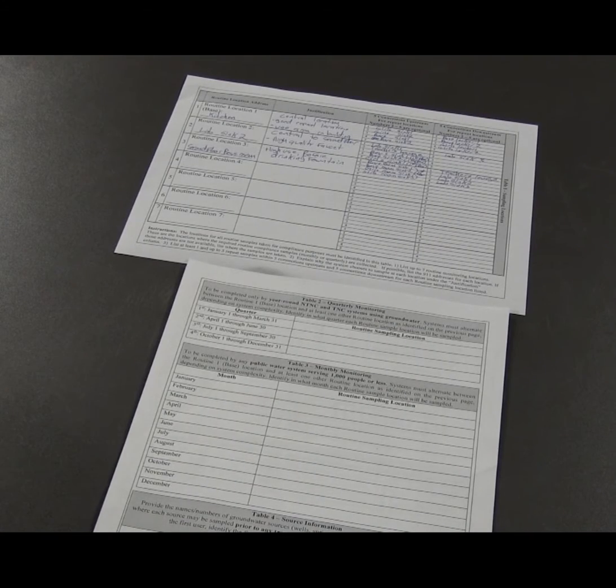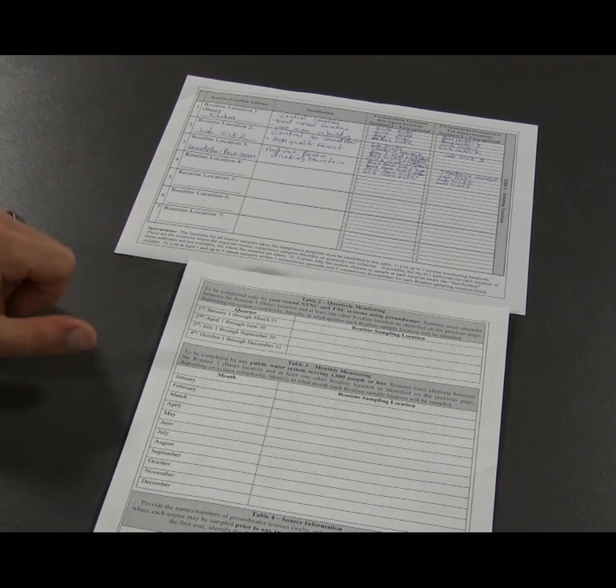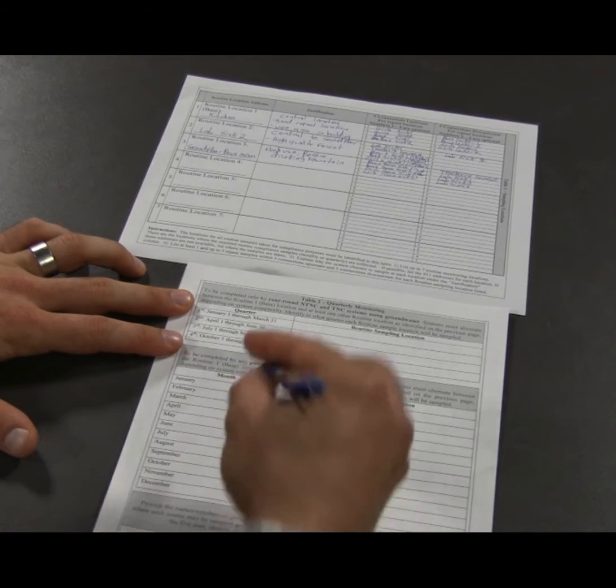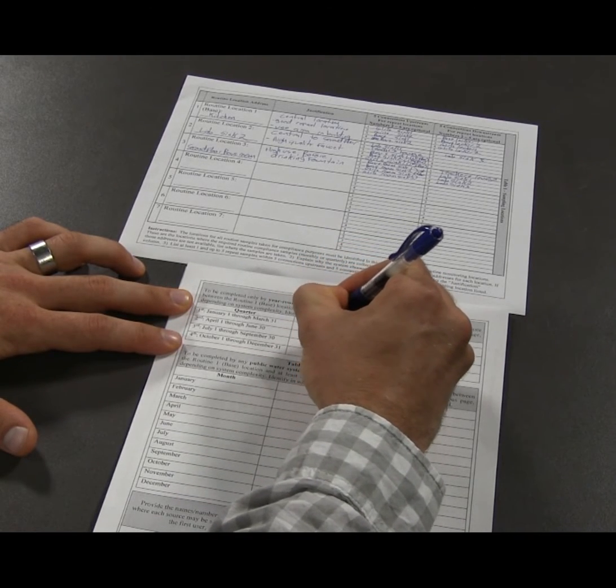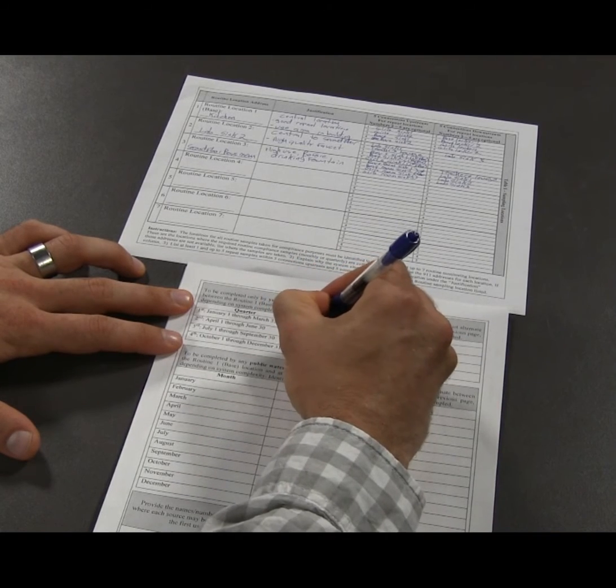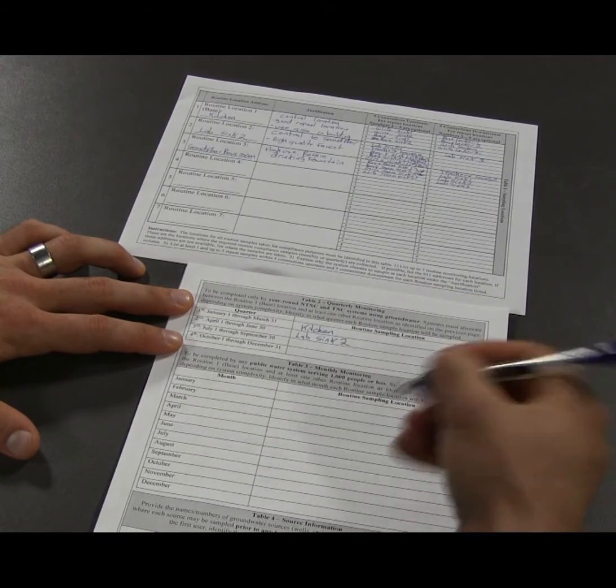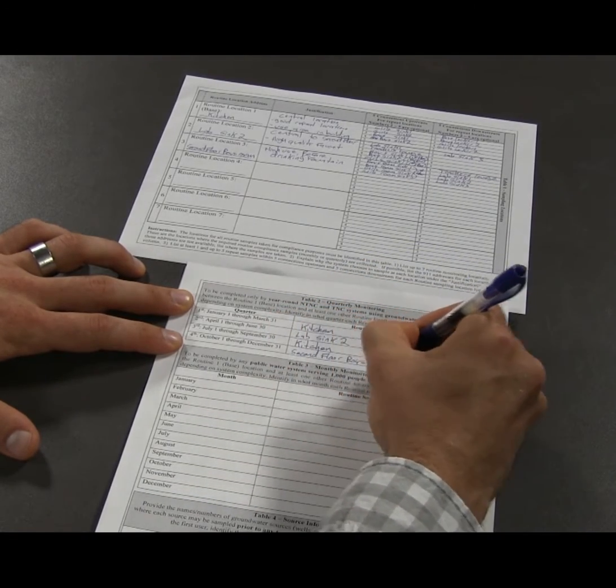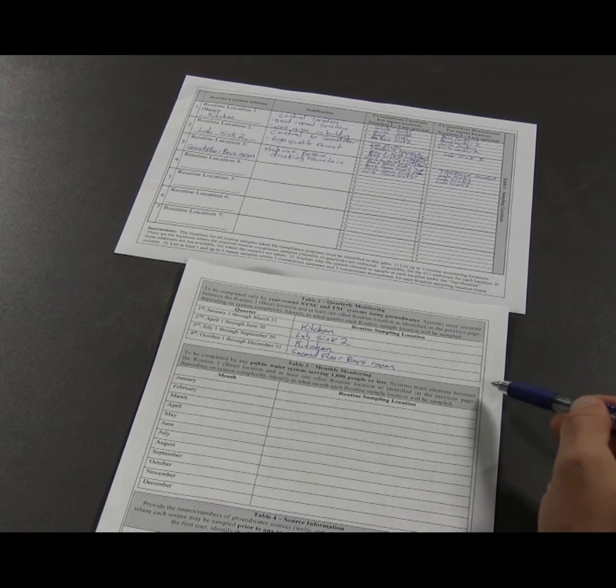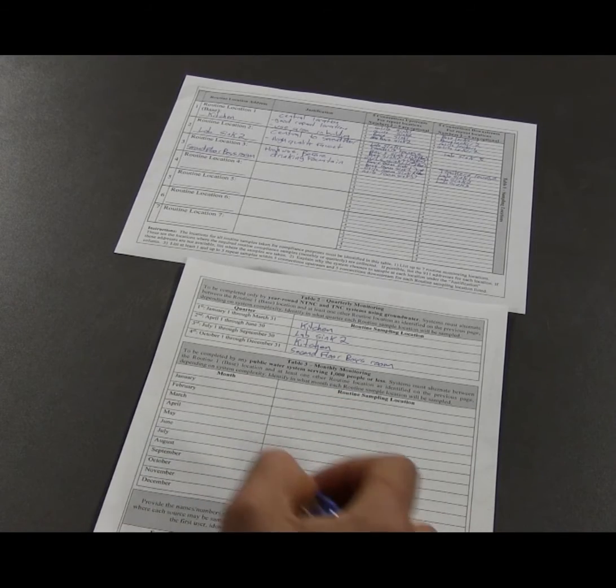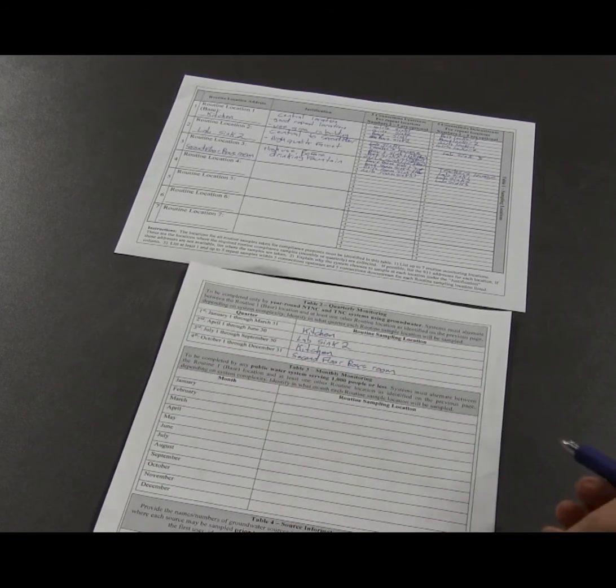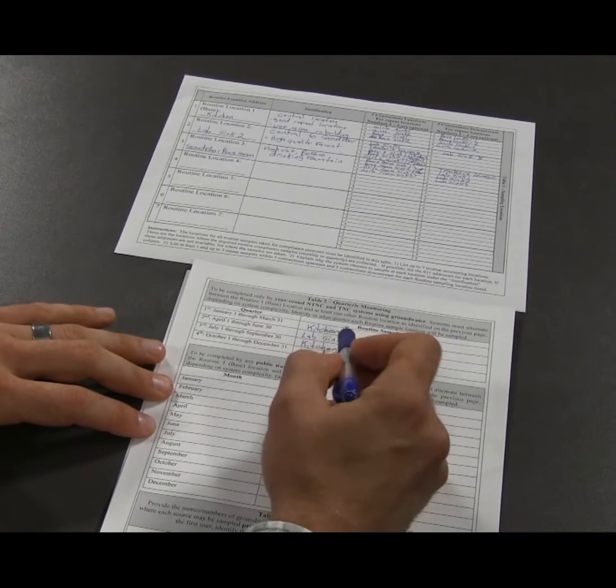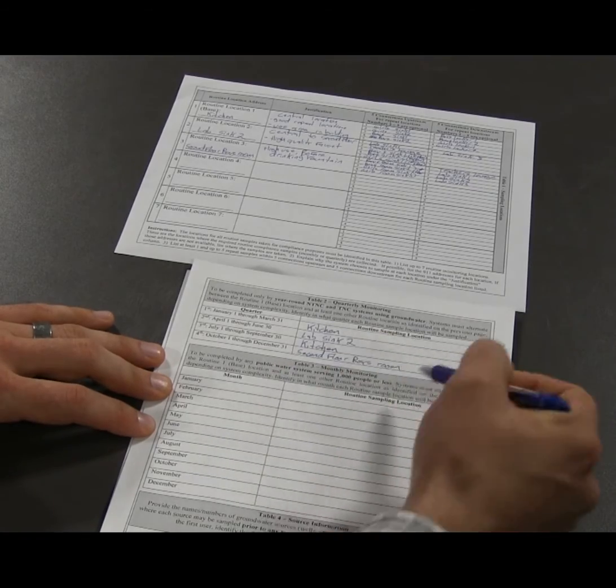Now we're going to fill out tables two and three, which is the monitoring schedule. Because this is a school and it serves under a thousand people, it can sample quarterly. So we'll start with the quarterly schedule. So the base, you want to start with the base when you start with monitoring. So the base is the kitchen, and then you want to alternate your other locations. So you've got your lab sink, you go back to the kitchen, and then you go to second floor boys room. Now because these systems potentially can trigger monthly monitoring under the rule, we also need to fill this out. Community systems just fill this out. You don't have to fill out the quarterly because those systems aren't eligible to sample on a quarterly schedule. So all systems need to fill out the monthly schedule. So it's going to be the base, sample two, base, sample three, repeated throughout the year.